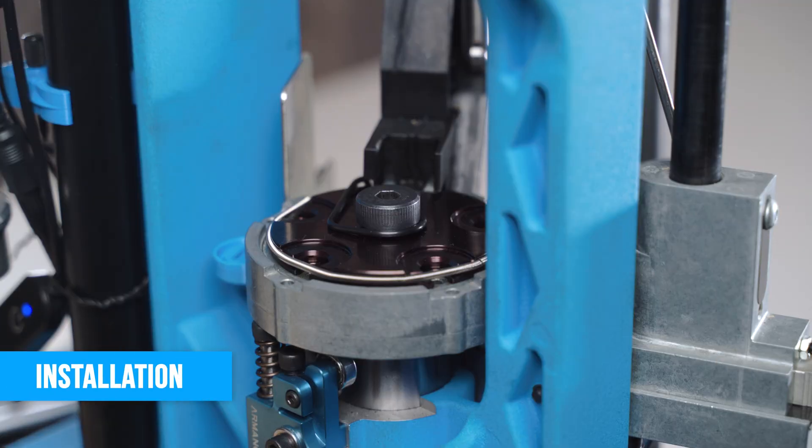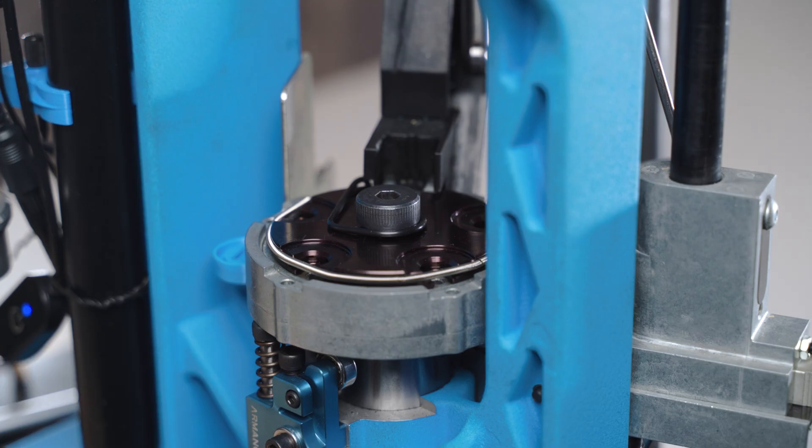Now we will show you how to install the Armano single stage conversion kit on a Dillon XL 750 machine, and the process is exactly the same for the Dillon 650.